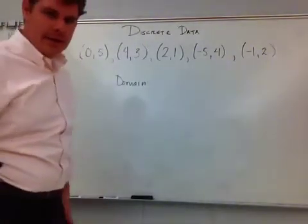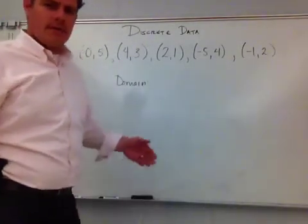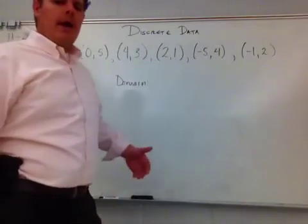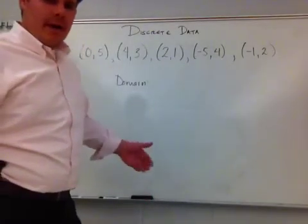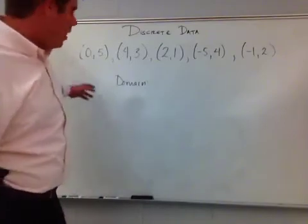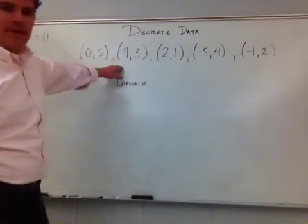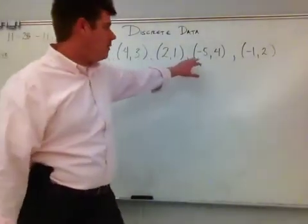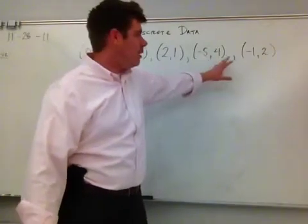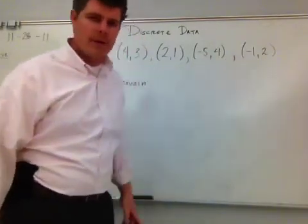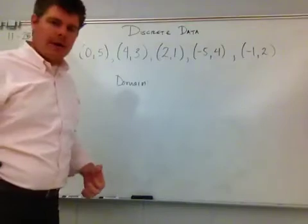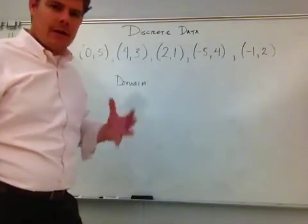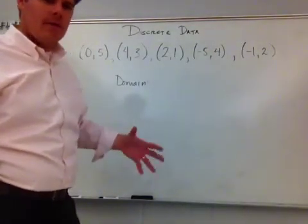Now, this is called discrete data. Discrete data is different from continuous data, and discrete data is basically looking at very specific points. I've given you (0,5), I've given you (4,3), I've given you (2,1), I've given the point (-5,4), and we've got this other coordinate (-1,2). I am not talking about any other numbers or sets of data other than what is given.